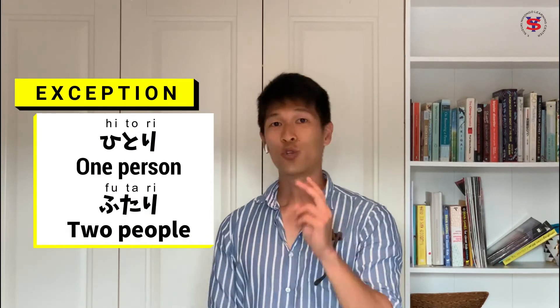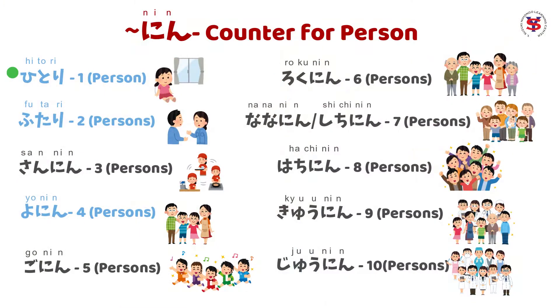Ang counter suffix for person is nin. So we are going to say the number of people, then add nin. Konting exception lang for one and two people — one person is hitori, two people is futari. So we have: hitori, futari, san-nin, yon-nin, go-nin, roku-nin, nana-nin, hachi-nin, and so on.